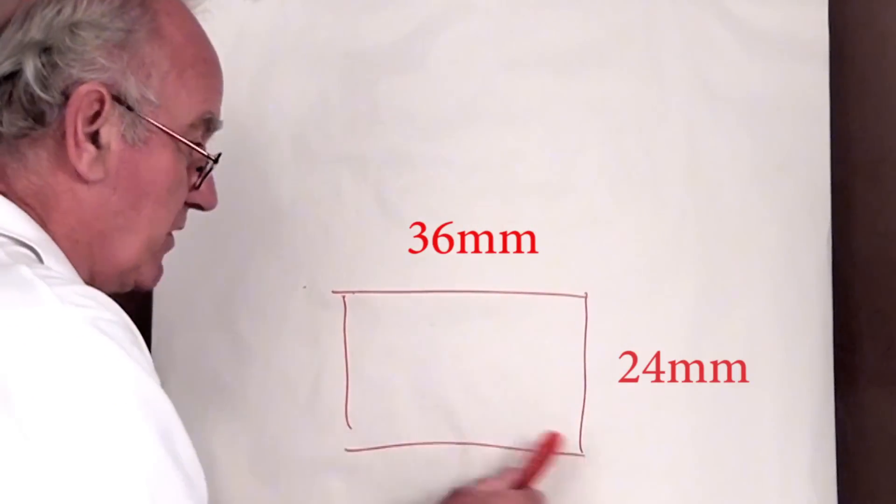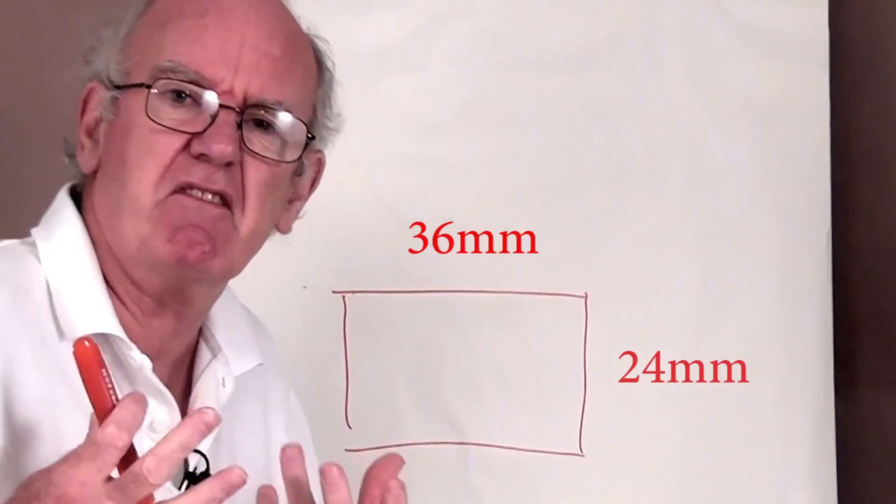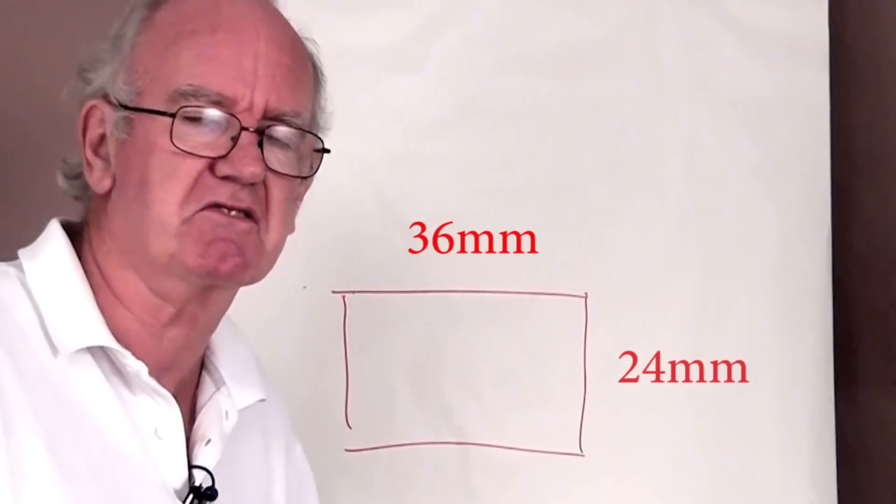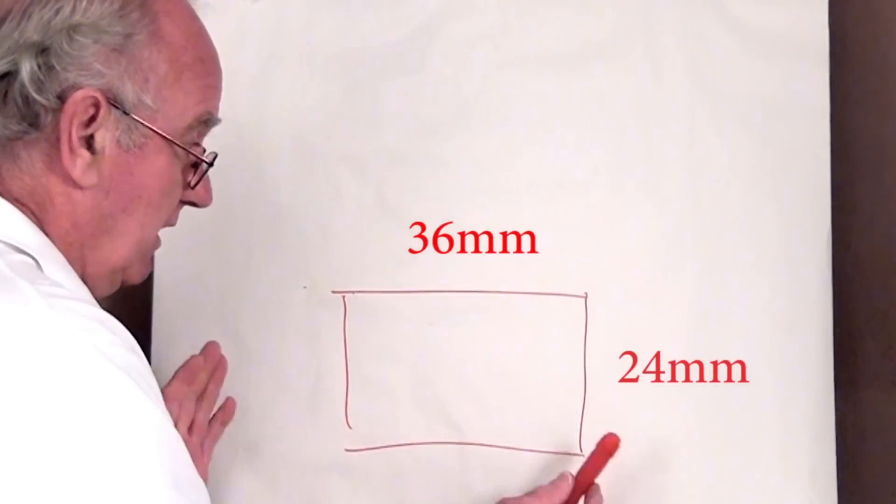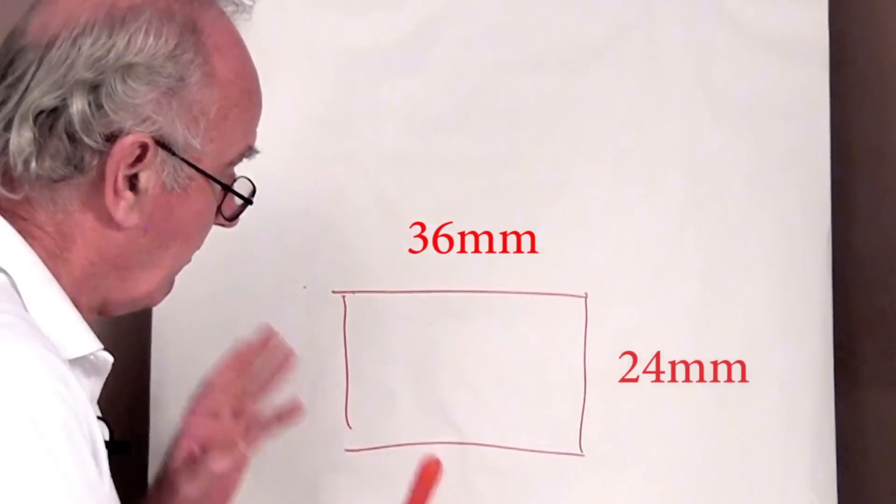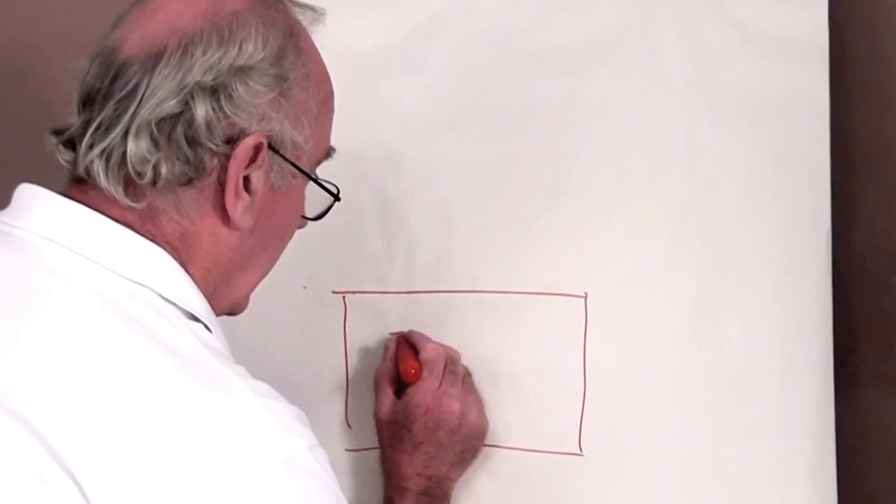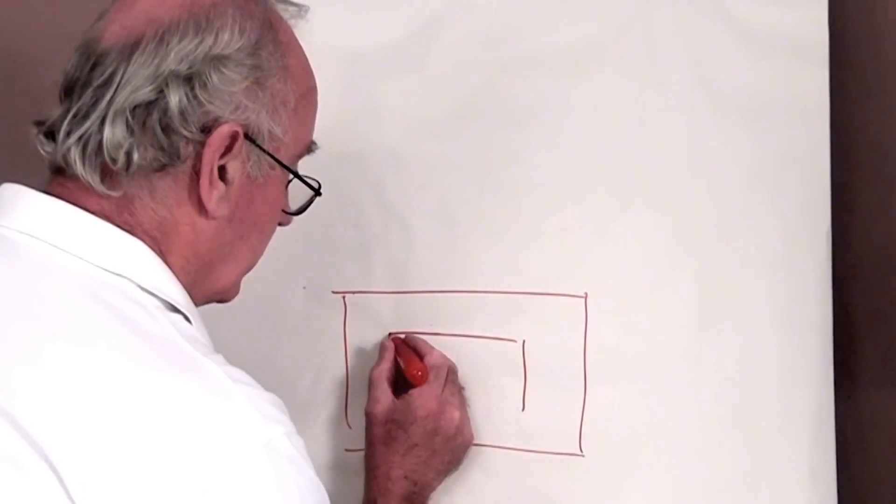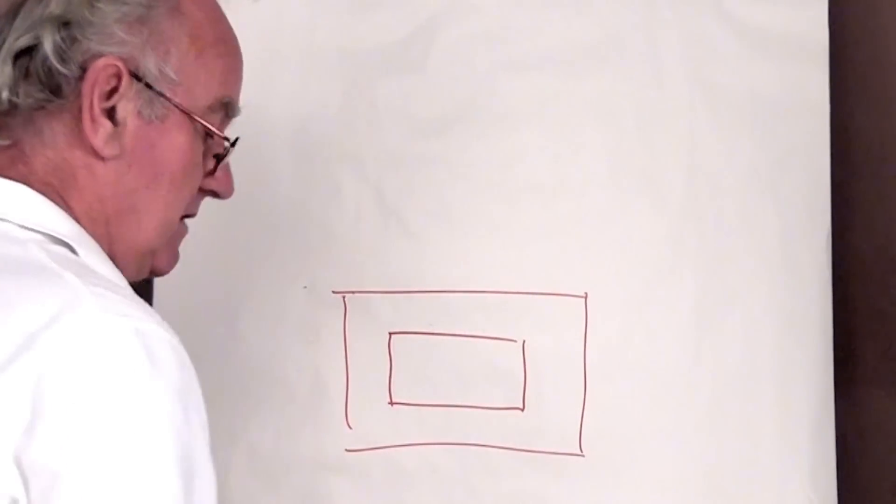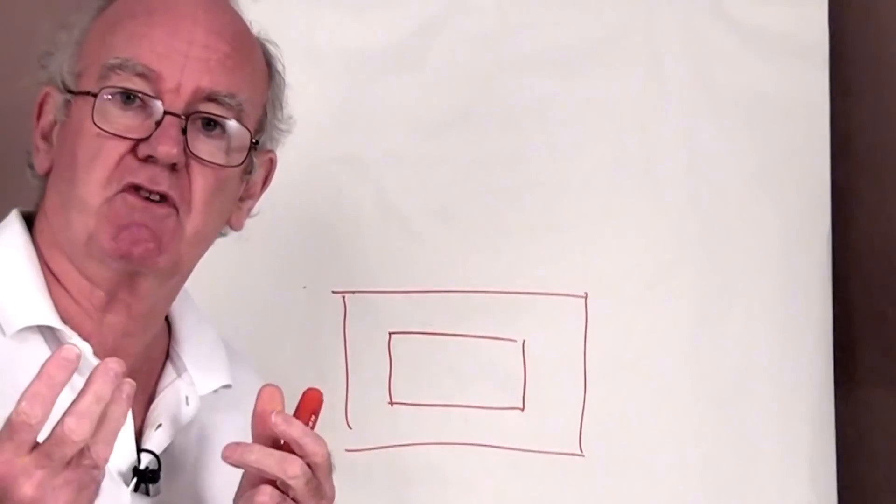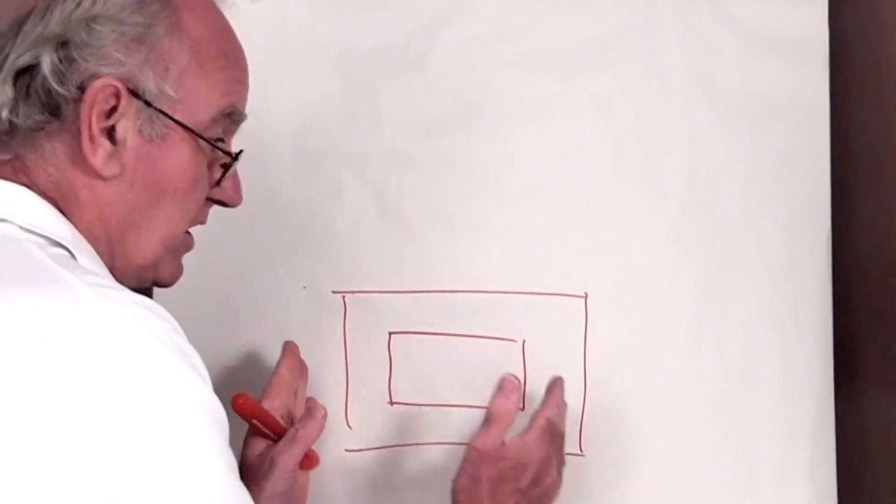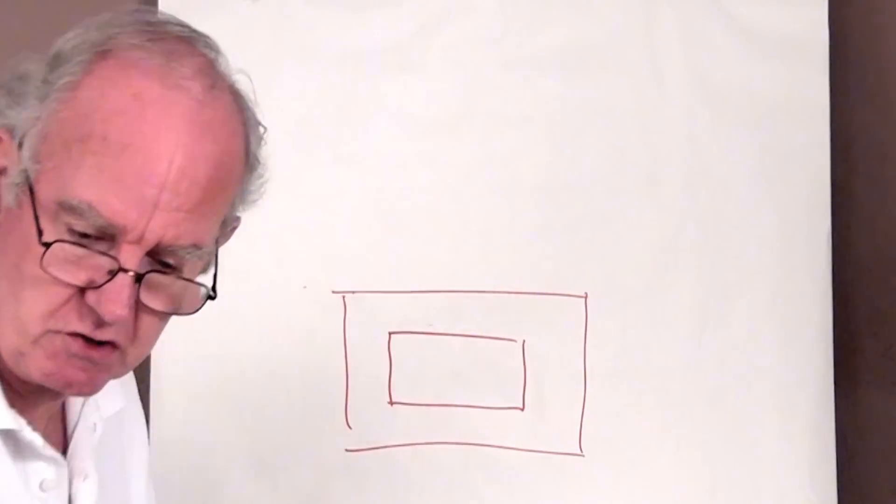Now some of our digitals have that but those are the very expensive ones. Those are the ones that cost 2000-3000 pounds. Beautiful quality. But our digitals, the smaller ones, have a sensor in them that do that. Now this of course means we're going to get a different result.